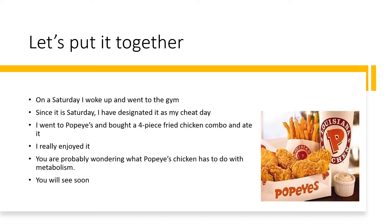Now that we've talked about catabolic and anabolic reactions, let's put it together. I'm going to use a favorite example of mine. On a Saturday, I woke up, went to the gym, worked out really hard, and burned a lot of calories. Since it's a Saturday — my designated cheat day — I went to Popeye's and bought a four-piece fried chicken combo and ate it. I was thinking about an eight-piece but it was too big. And I bet you're wondering: what does Popeye's chicken have to do with metabolism? You're about to find out.